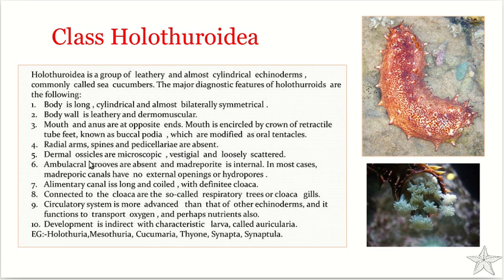Beneath the epidermis is the dermis, which is a thick layer of connective tissue with embedded ossicles. Dermal ossicles are microscopic, vestigial, and loosely scattered. Sea cucumber ossicles do not function in determining body shape. Larger ossicles form a calcareous ring that encircles the oral end of the digestive tract, serving as a point of attachment for body wall muscles. Beneath the dermis is a layer of circular muscles overlying longitudinal muscles.